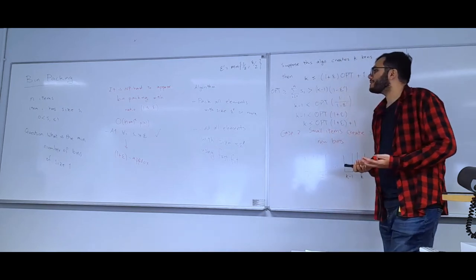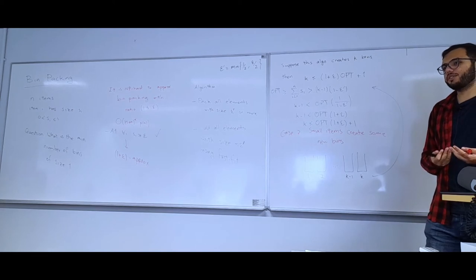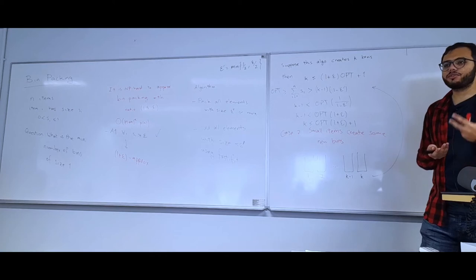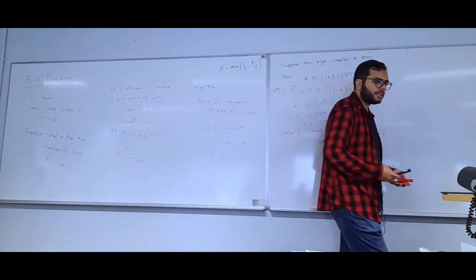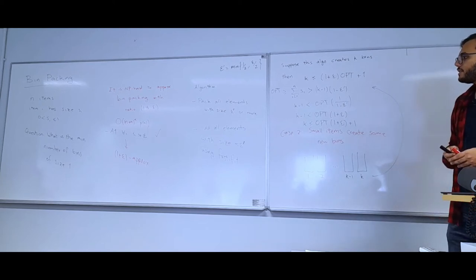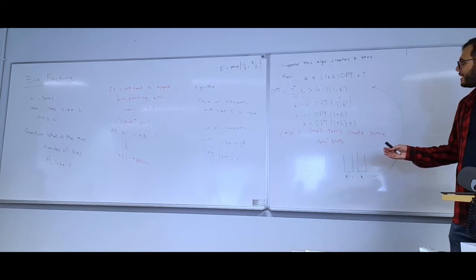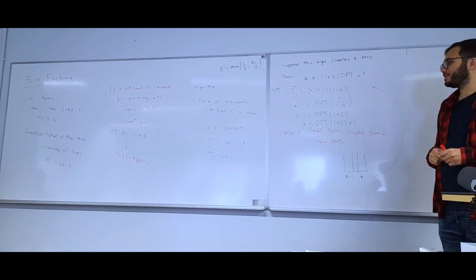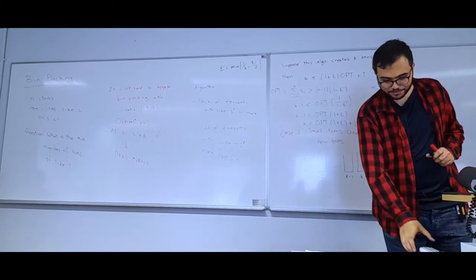So the problem is both easy and hard depending on the instance. If you frequently have instances with only two bins, you can't do better than ratio 3/2, and this algorithm uses at most 3 bins instead of 2. But if OPT is large, the algorithm effectively gives a (1+ε) approximation, since the additive +1 becomes negligible.